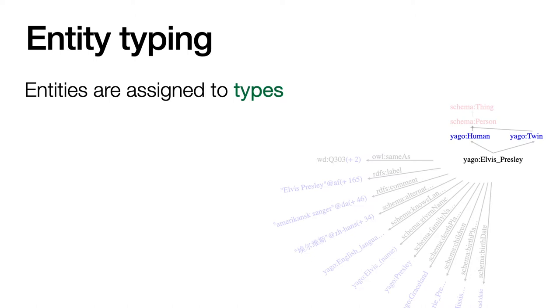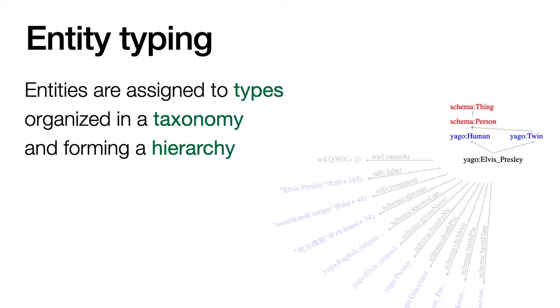Usually in knowledge graphs, entities are assigned to different types, and those types are organized in a taxonomy, which is just a tree structure representing the hierarchy of types.